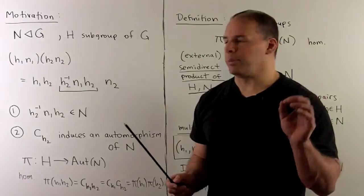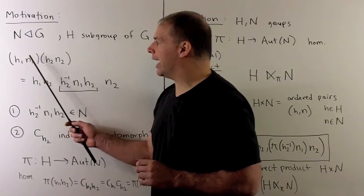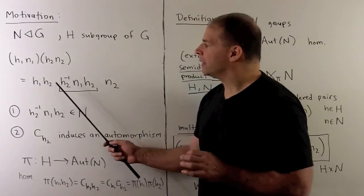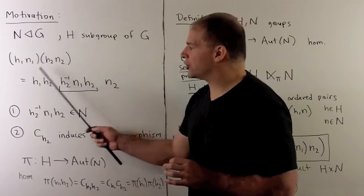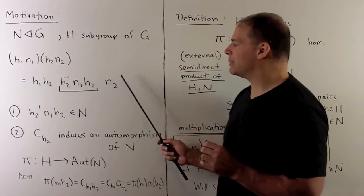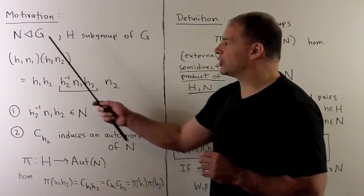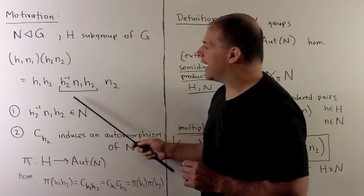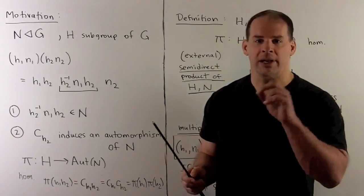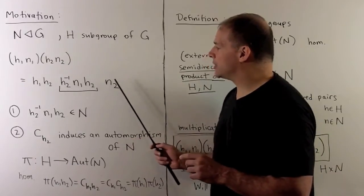If G is non-abelian, what we can do is insert H2 H2 inverse between H1 and N1. Then we'll have H1 H2 together, so the H's are together. Then we'll have H2 inverse N1 H2 times N2. Because N is normal, if we conjugate N1 by H2 inverse, we get another element in N. So we've applied two elements of N here.